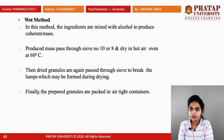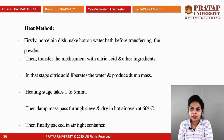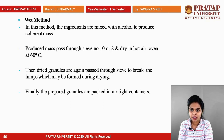In the wet method, the ingredients are mixed with alcohol to produce a coherent mass — this is the key difference from the heat method, where a damp mass is produced. The mass is passed through sieve number 10 or sieve number 8 and dried in a hot air oven at 60°C. After drying, the dried granules are again passed through a sieve to break any lumps formed during drying. Finally, the prepared granules are packed in airtight containers.